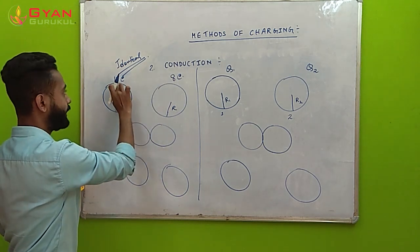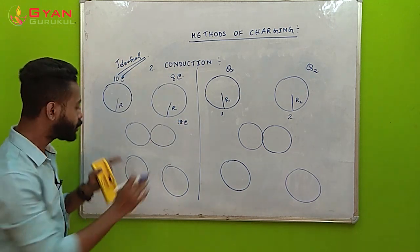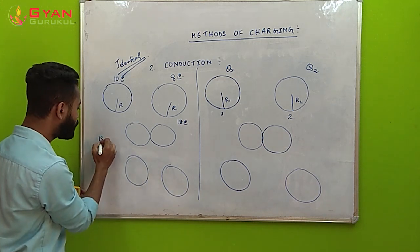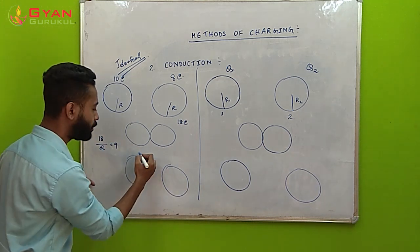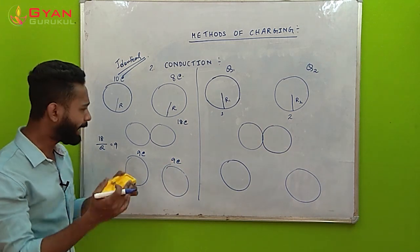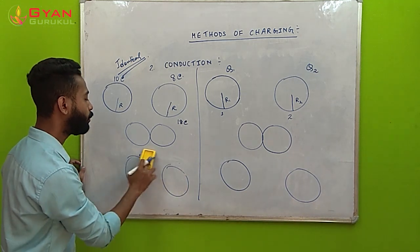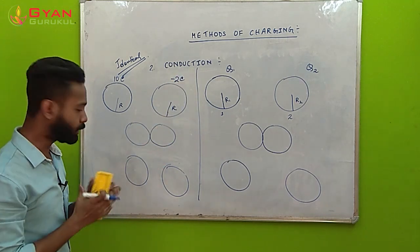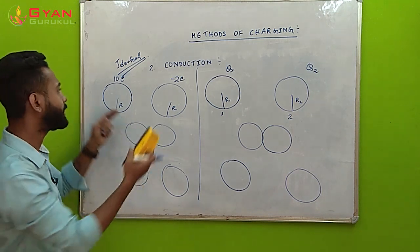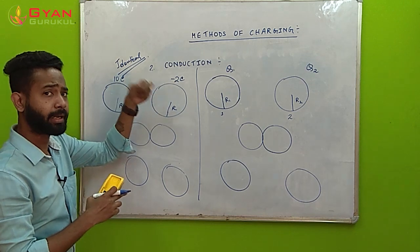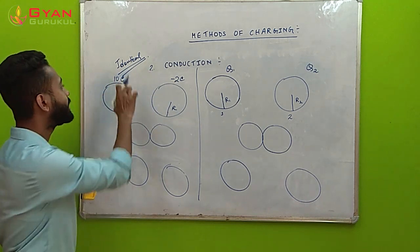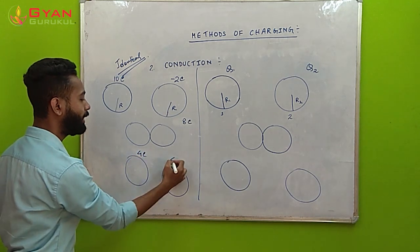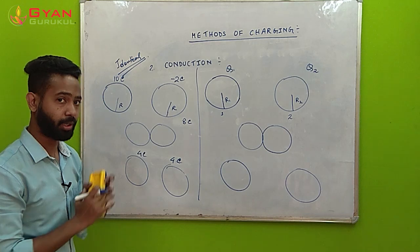Since they need to have equal amounts of charge, 18 coulombs divided by 2 gives 9 coulombs — so each would have 9 coulombs. Now suppose one conductor has minus 2 coulombs instead. Since charge is a scalar quantity, total charge is 10 minus 2, which is 8 coulombs. Dividing by 2 gives 4 coulombs each. So both conductors will have 4 coulombs of charge. That is the approach when we talk about identical conductors.